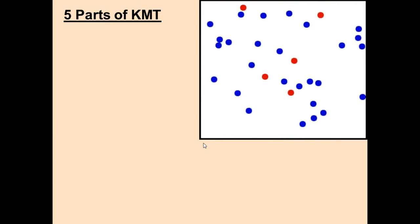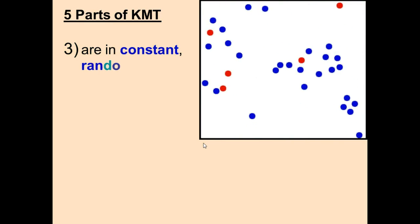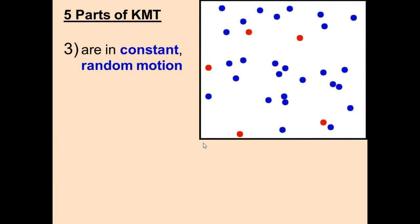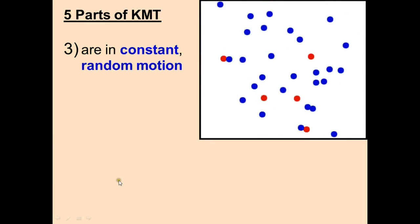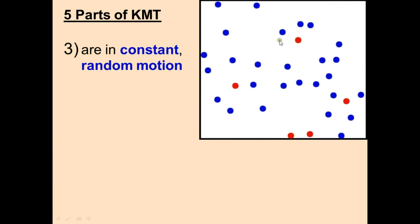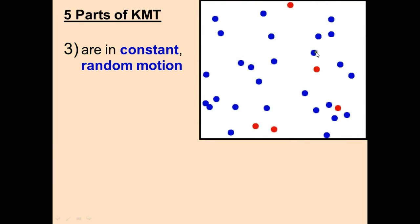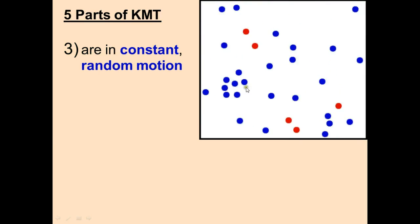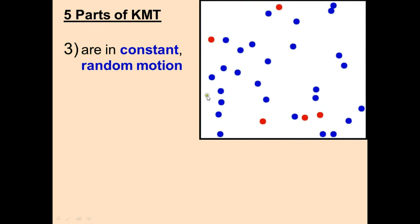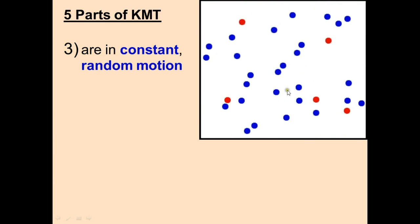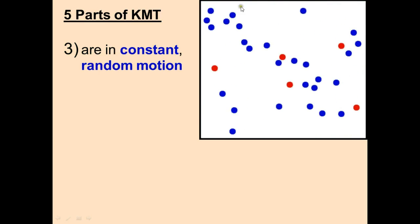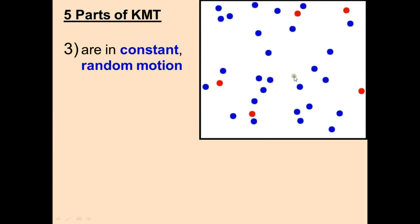The third part says that gas particles are in constant random motion. As you can see, the gases are in no pattern at all — they're just moving around and bouncing, hitting things, hitting each other or the wall.